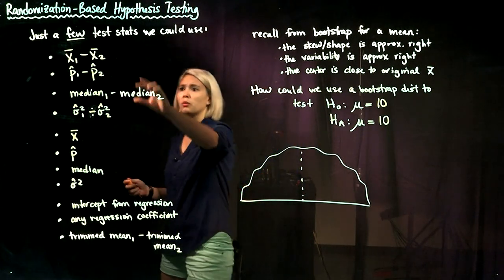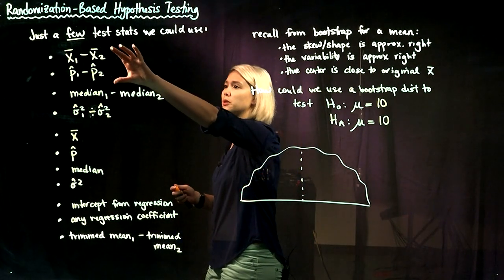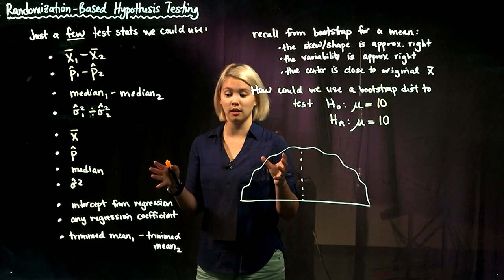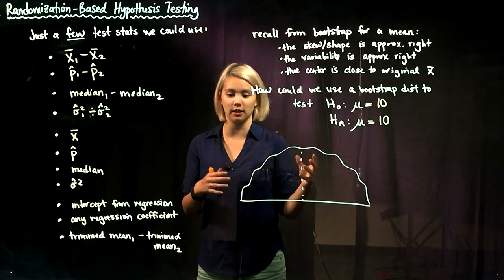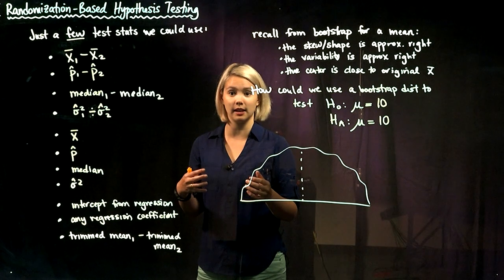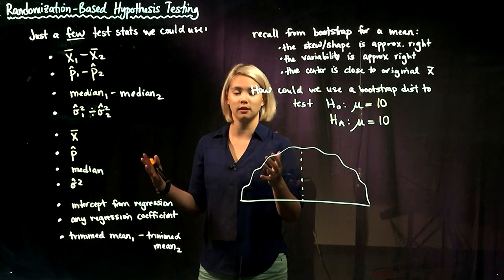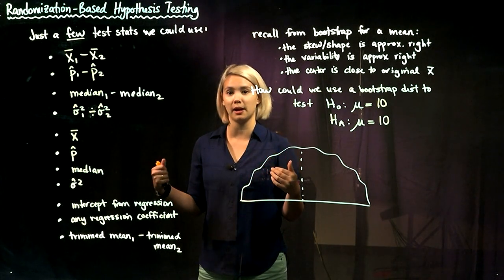When we were doing two groups, we pretty much broke the relationship between the group and the actual data to randomly reassign it. And that's how we calculated our test statistics under the null hypothesis.